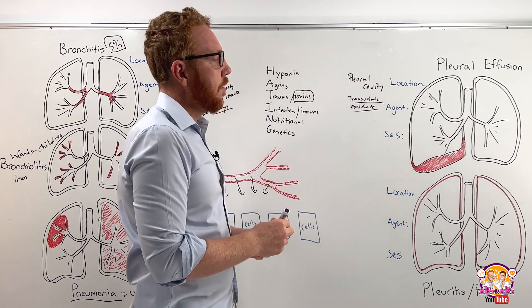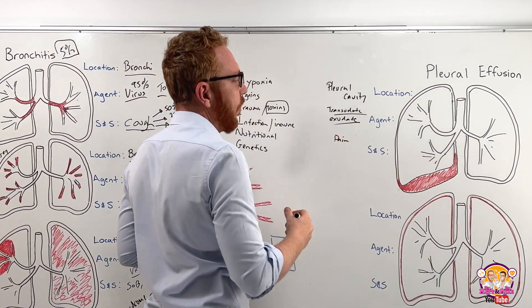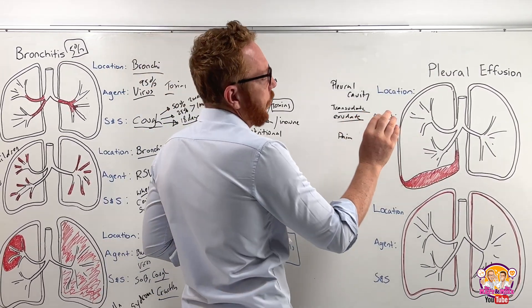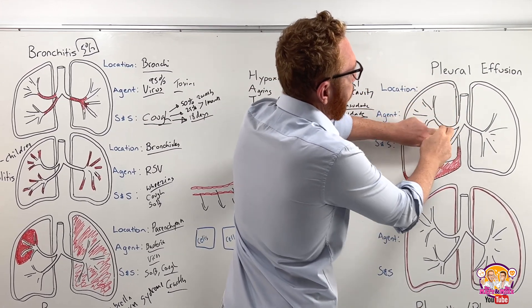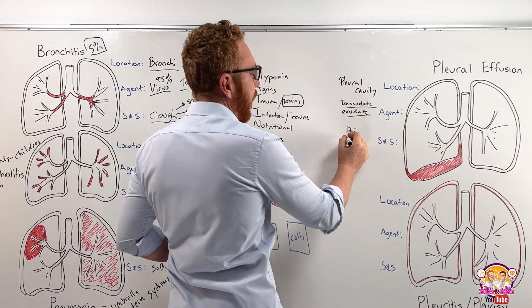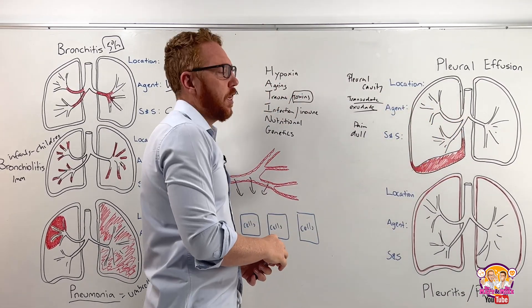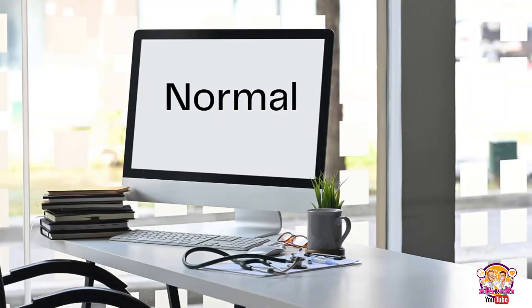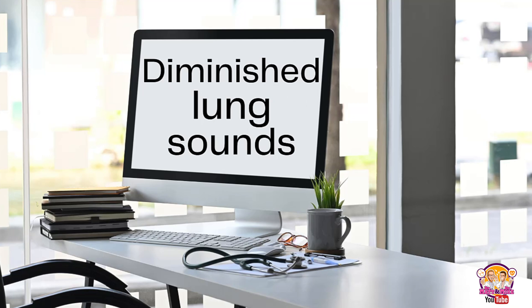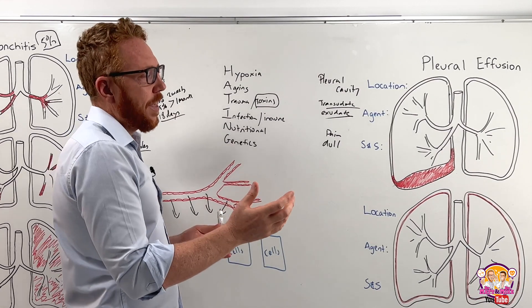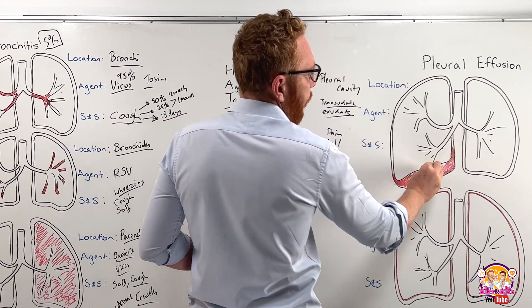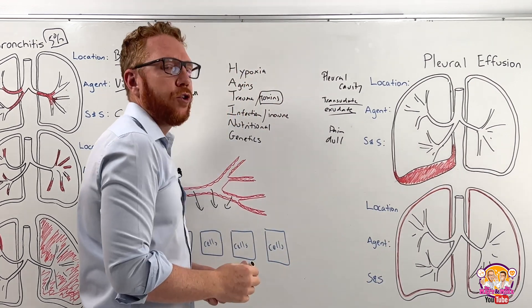The signs and symptoms of pleural effusion: it would be painful, so we'd get pain on breathing, deep breathing, coughing, or sneezing. If you were to do percussion, normally the lung sounds hollow because it's full of air — but over the effusion it would be dull on percussion. And if you were to listen with a stethoscope, we would have less ventilation in that area — diminished lung sounds — because when you place the stethoscope over the lower base where that effusion is, there's no airflow in that region, so we hear reduced breath sounds.